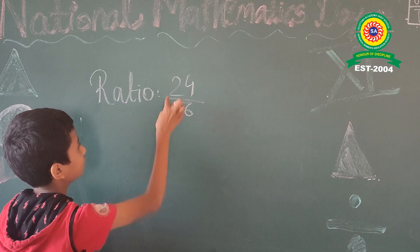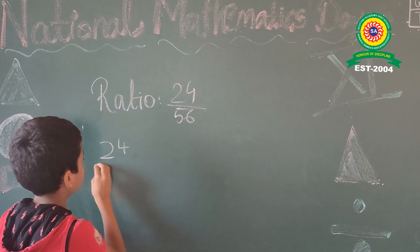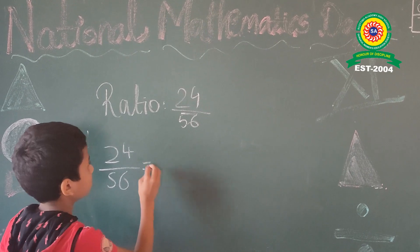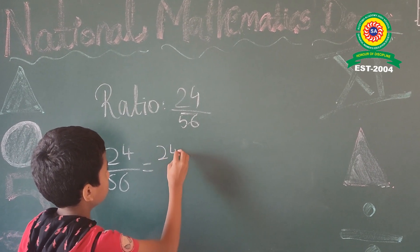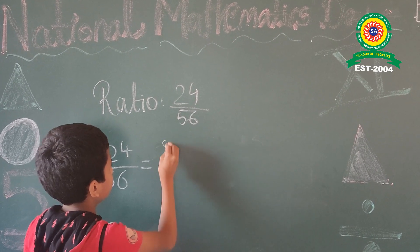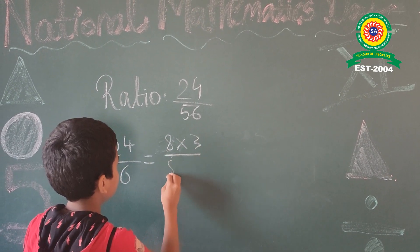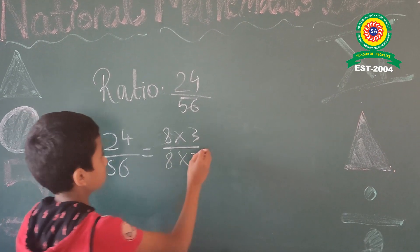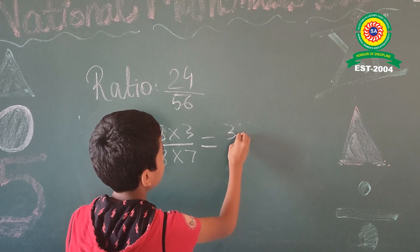We have to find the ratio of 24 and 56. 24 and 56. We have to find the ratio. 8 multiplied by 3 equals 24. 8 comes in the 24 table, and 7 eights are 56. The answer is 3 is to 7.